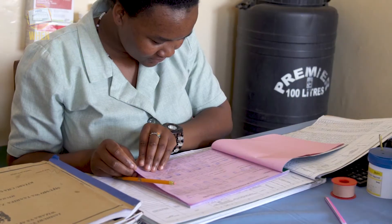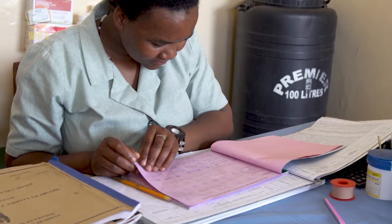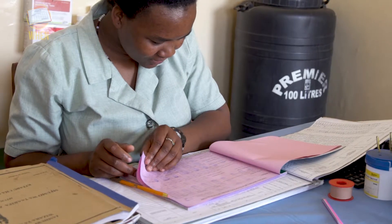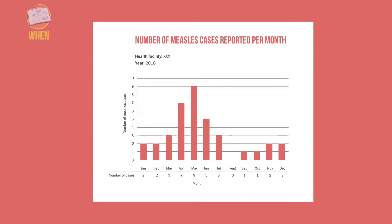First, let us look at how to detect when outbreaks occur. To understand the frequency and timing of a specific vaccine-preventable disease, you can plot the number of cases over time. This graph shows cases of measles by month, and you can see how a graph like this can be used to show trends and alert to possible outbreaks.